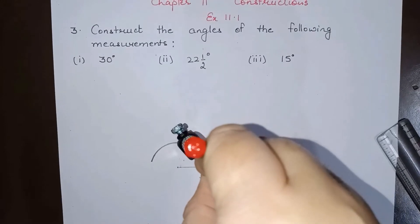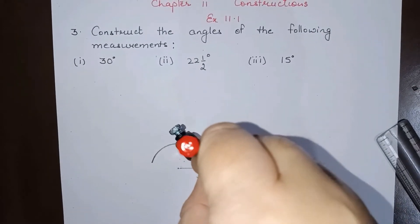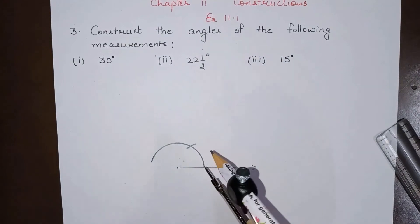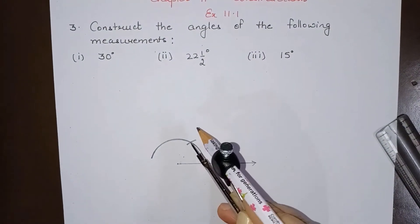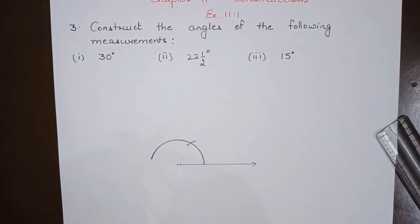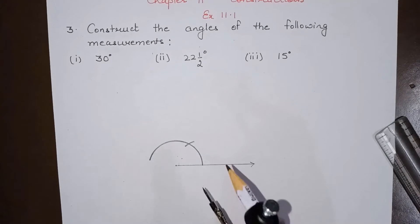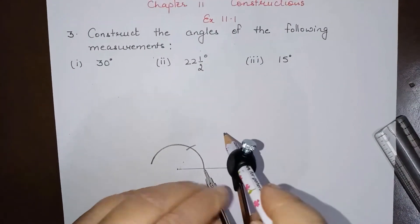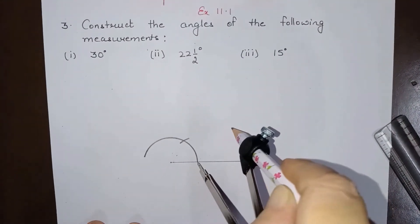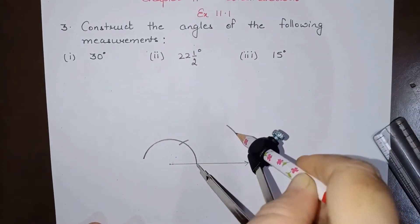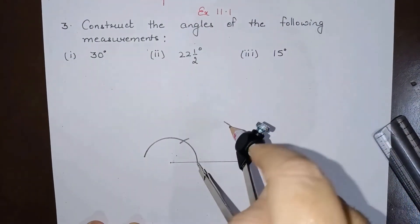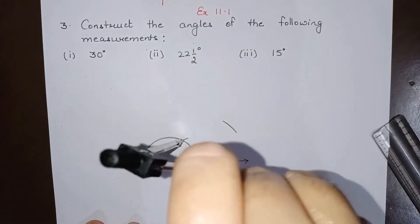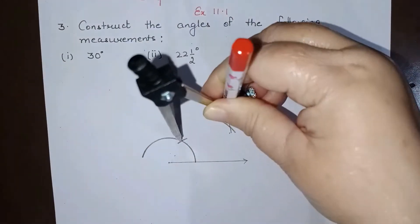30 degrees is the bisector of 60 degrees. So now from this point and from this point we will draw two arcs of equal radius — that is, we are bisecting the angle of 60 degrees — like this and from this point, like this.